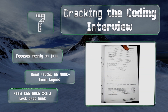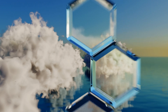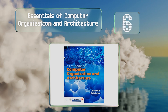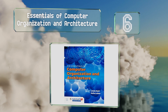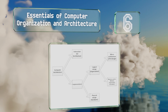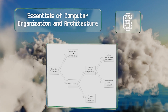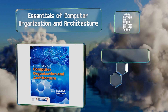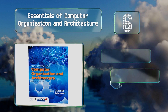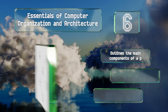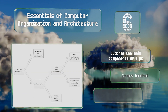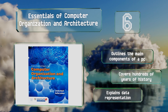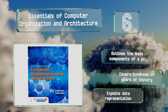But it feels too much like a test prep book. Moving up our list to number six, every new copy of Essentials of Computer Organization and Architecture comes with access to Navigate 2 Advantage, which provides students with a number of practice activities and assessments. This text has a broad scope yet is concise enough for a single term. It outlines the main components of a PC and explains data representation.